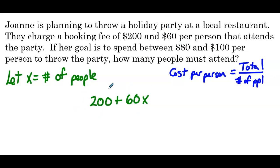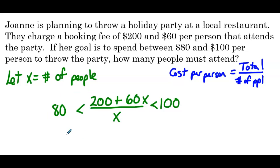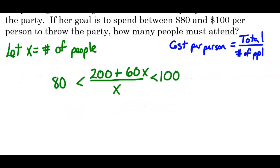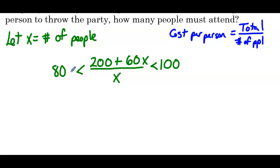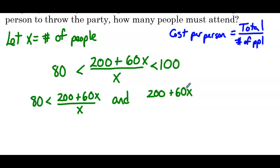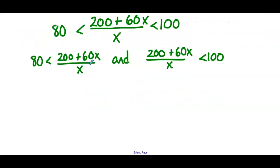So we have the compound inequality: 80 is less than (200 plus 60x) over x, which is less than 100. This is a compound inequality, and we need to separate it and solve each part individually. So we have: 80 is less than (200 plus 60x) over x, AND (200 plus 60x) over x is less than 100.